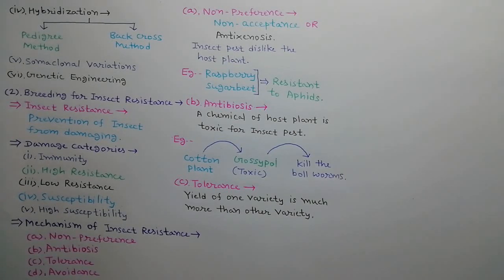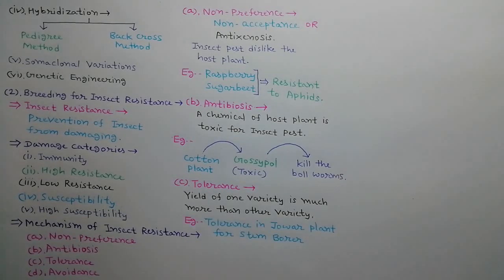Third mechanism is tolerance. When magnitude of insect damage is same in two plant varieties but the yield of one variety is much more than other variety, then this character of first variety is called tolerance. It means variety 1 can tolerate the insect damage. For example, tolerance in jowar plant for stem borer.